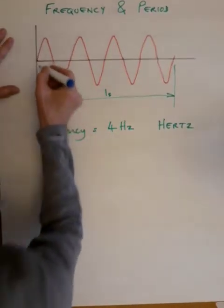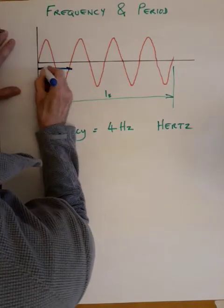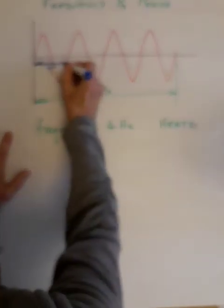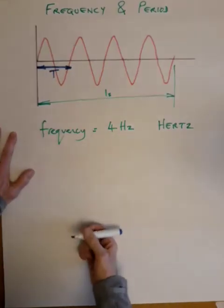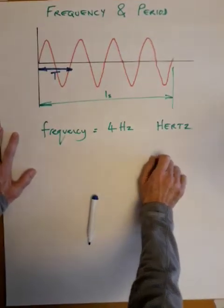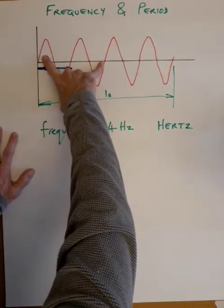So what is the period? The time taken to complete one cycle. Well, hopefully with a bit of common sense you already realize that if four of these occur in a second,